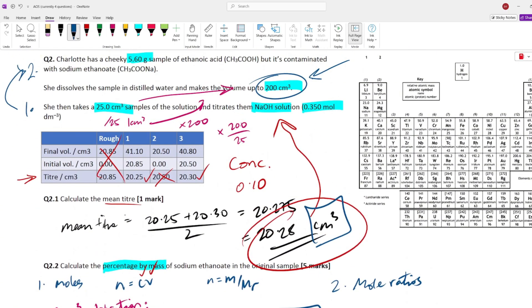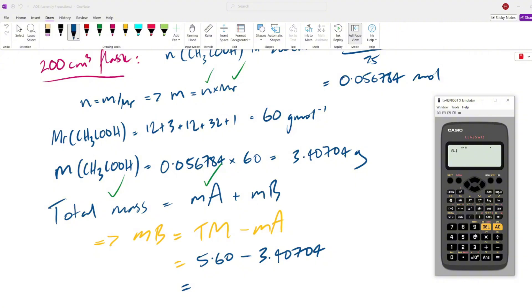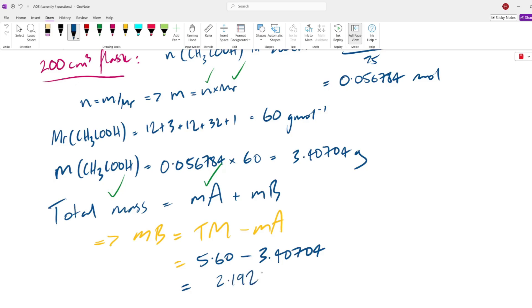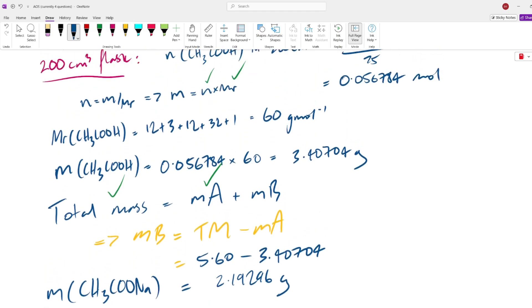We know what the total mass is, 5.6 grams. Let's do that right here, 5.6. Easy. Minus the mass of A, which we just calculated, 4.8672. Put that in your calculator. Let's do this. 5.6 minus 4.8672. Did I do that right? Yep. Equals 0.7328 grams. This is the mass of our sodium ethanoate, which is our impurity.